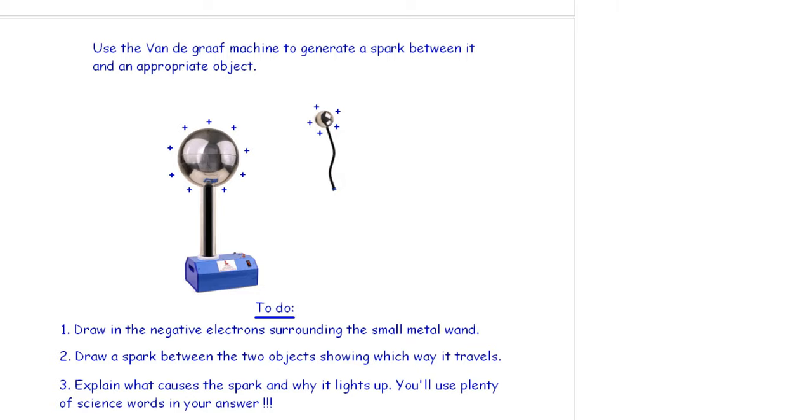So to explain, the Van de Graaff machine has had all of its electrons, its negative charges removed. It is positively charged. The metal ball on the right hand side now still has lots of negative charges. It has five positives. So it's going to have five negatives.